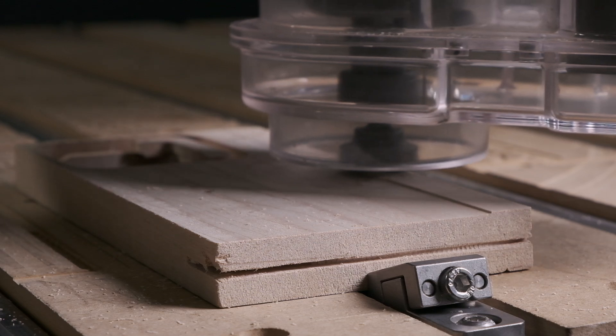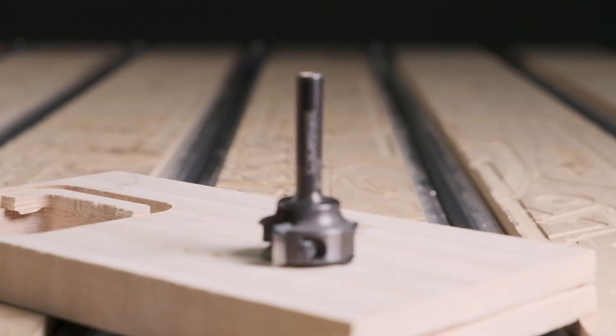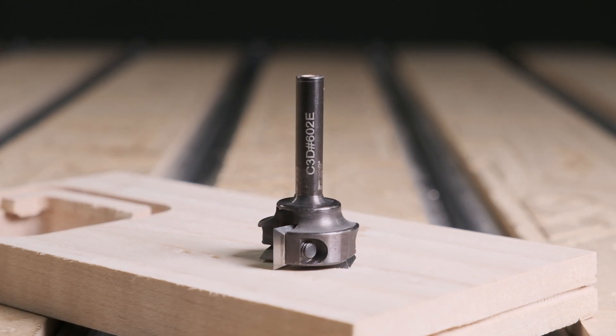However, we don't recommend exceeding 24,000 RPM because if an insert breaks during cutting, there's a risk of it becoming a high-speed projectile, as well as the risk of damage to your router or spindle's bearings due to the sudden mass imbalance.